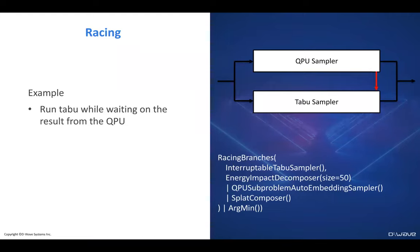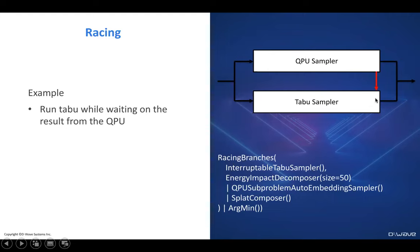The last type of hybrid I'll mention is racing. When you submit a problem to the quantum computer you're making a call to Leap — contacting a remote resource — so while the problem travels over the internet and is processed, your local system sits idle. Racing means submitting the problem both to the QPU and to a local sampler running on your system simultaneously. When the QPU solution returns, we interrupt what's happening locally and take the best answer from each, getting the benefit of both quantum and classical resources.